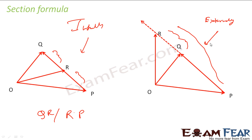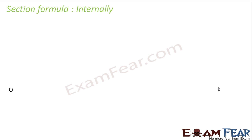Similar to the line concept — in coordinate geometry we learned to divide a line externally and internally in the ratio M to N. Similarly, here also we can divide a particular vector in ratio M to N, externally and internally. So let us learn the internal case.